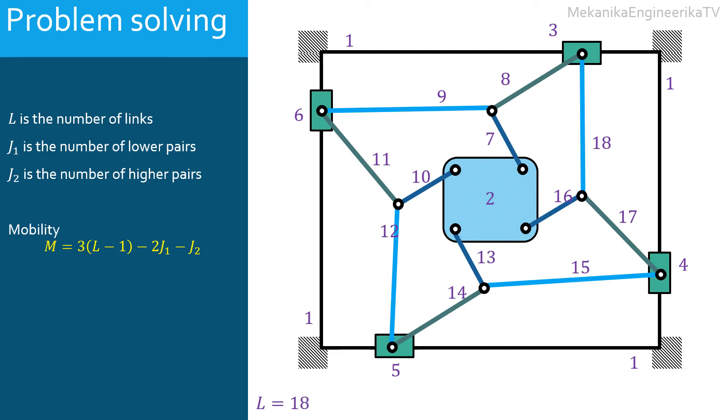In this mechanism there are 4 translating or prismatic kinematic pairs, one pair between each slider and the ground. We will have also 12 rotating or pin kinematic pairs. However, some are simple.